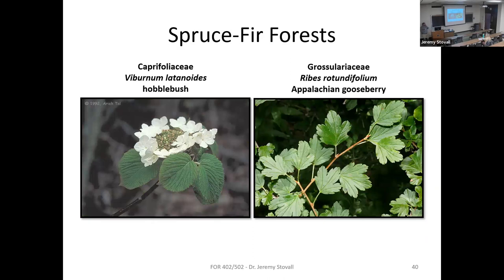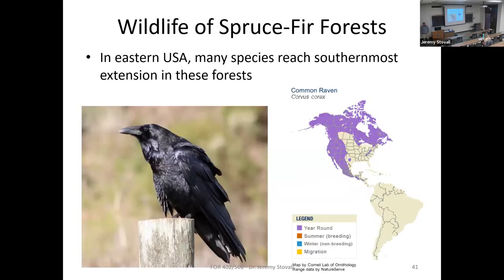We'll see a bunch of hobblebush in those ecosystems — it's a viburnum with pretty flowers. There are herbaceous species like Appalachian gooseberry, a member of the Ribes genus. A few years ago I was messing with a student, saying what I thought was a crow was a raven. Then we looked it up — the southern Appalachians are at the southern extent of the raven's range in the southeastern United States, and they're year-round residents. So if you see a really big crow near the spruce-fir, you may have a raven. Olive-sided flycatchers also show that same range map pattern we'll see over and over.